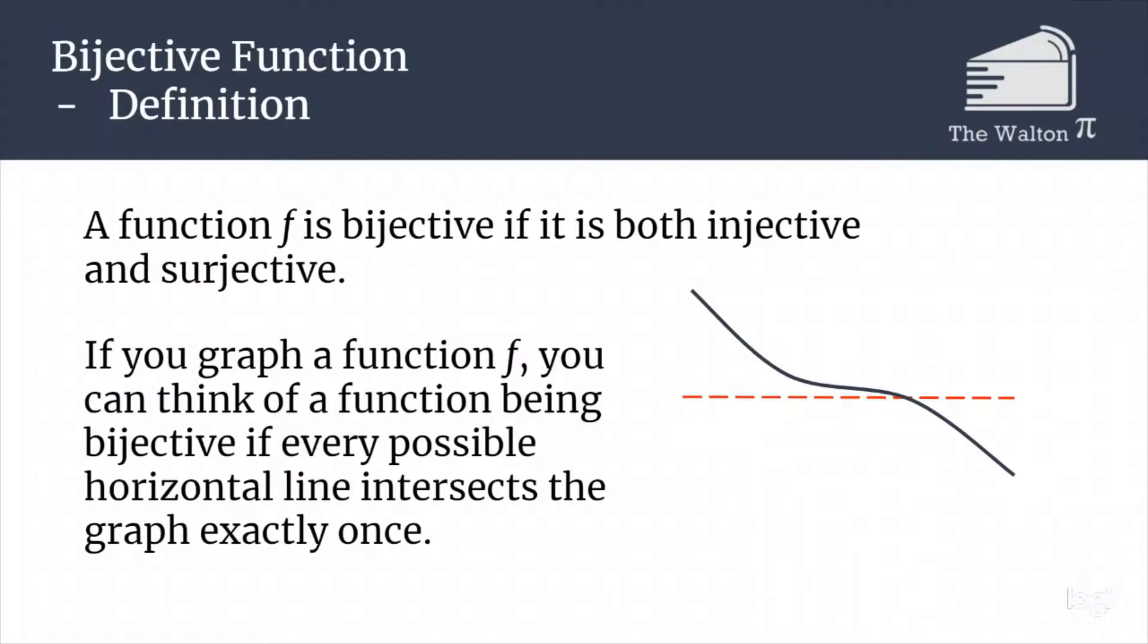The injective part says that it's going to intersect exactly once, meaning it doesn't intersect more than one time. And the surjective is the part where it says it intersects the graph, we are guaranteed that it intersects somewhere. So this function is going to be bijective, because no matter where we put the line, it will intersect the graph at least once, and also never more than once.